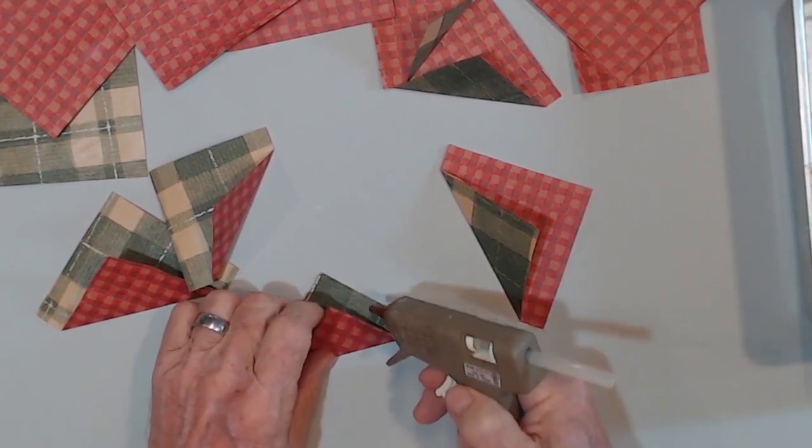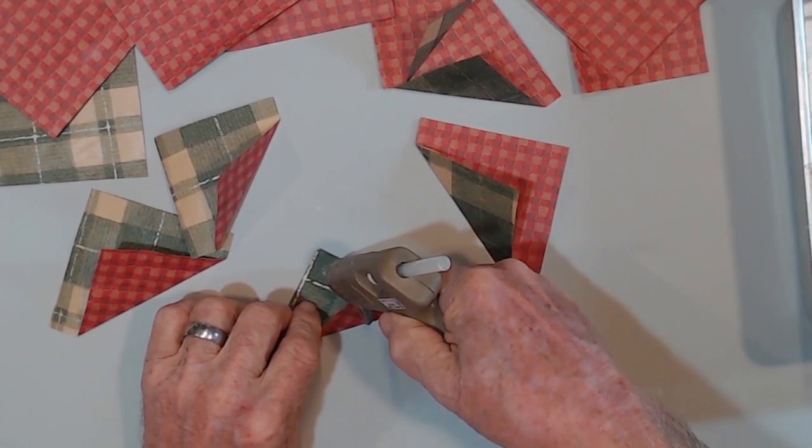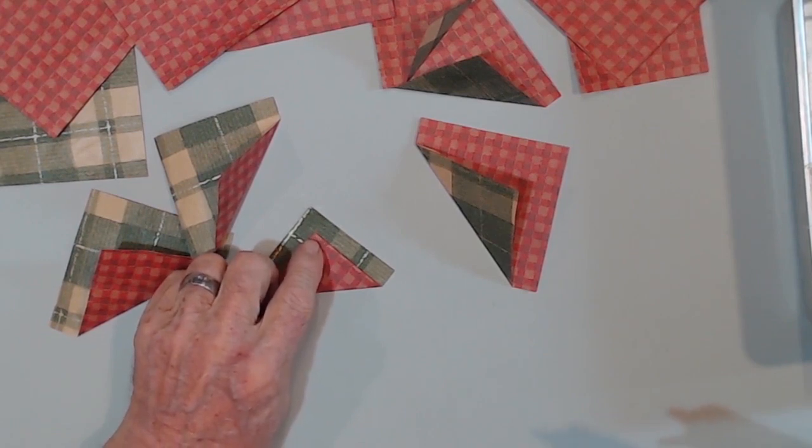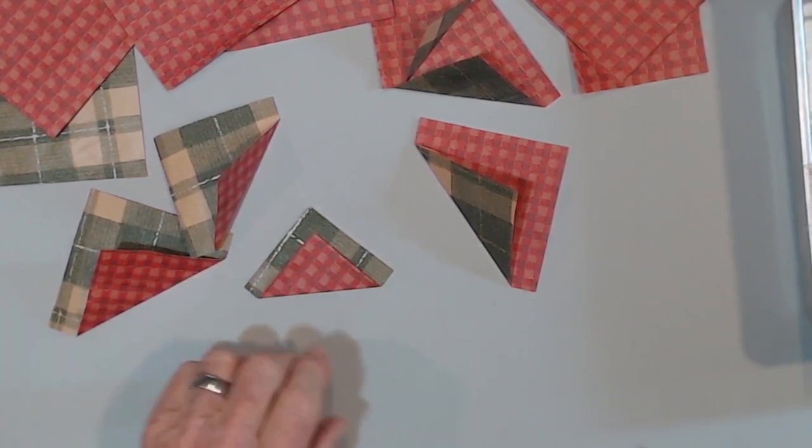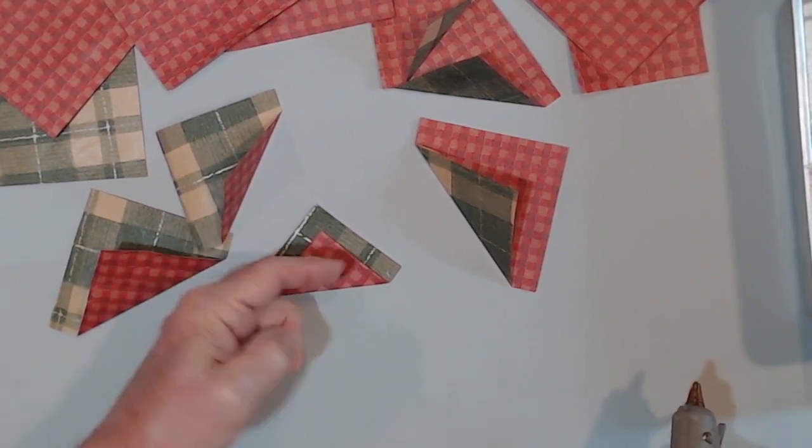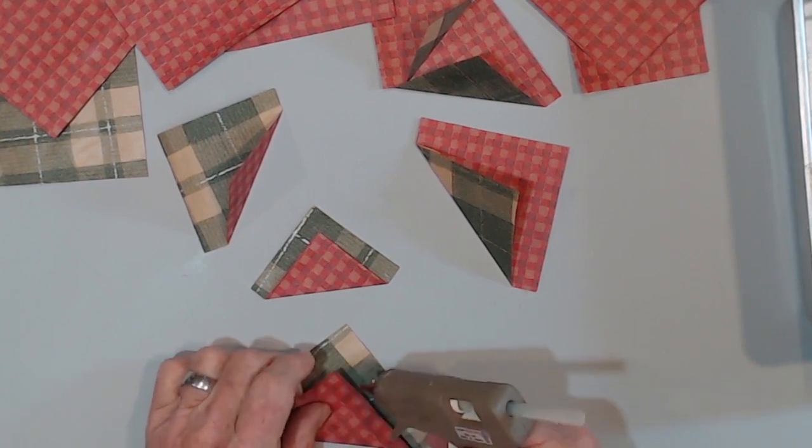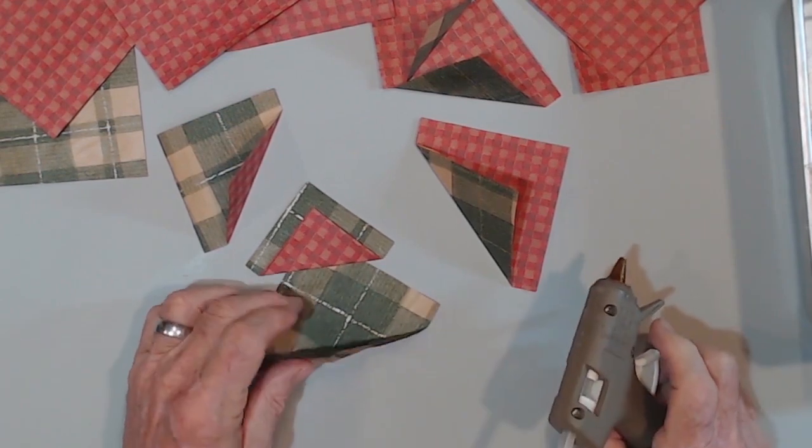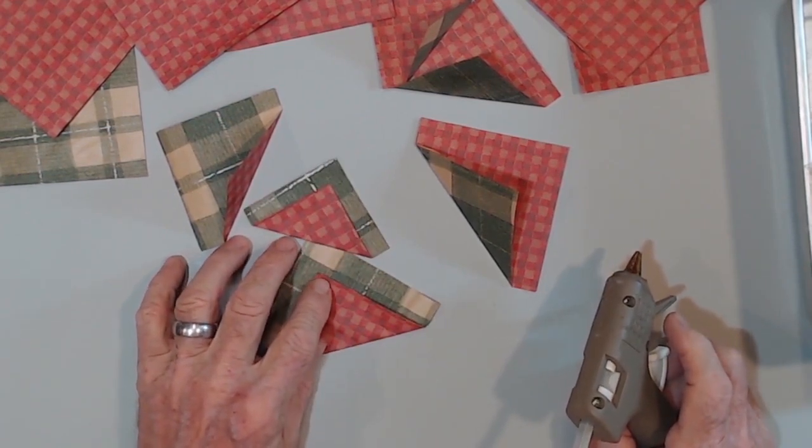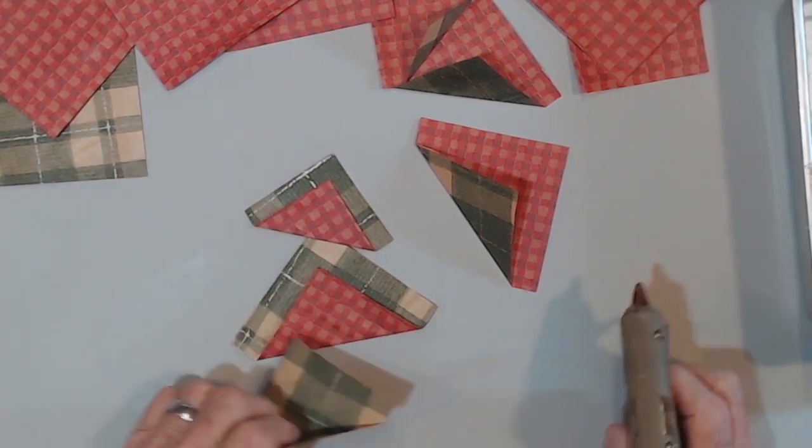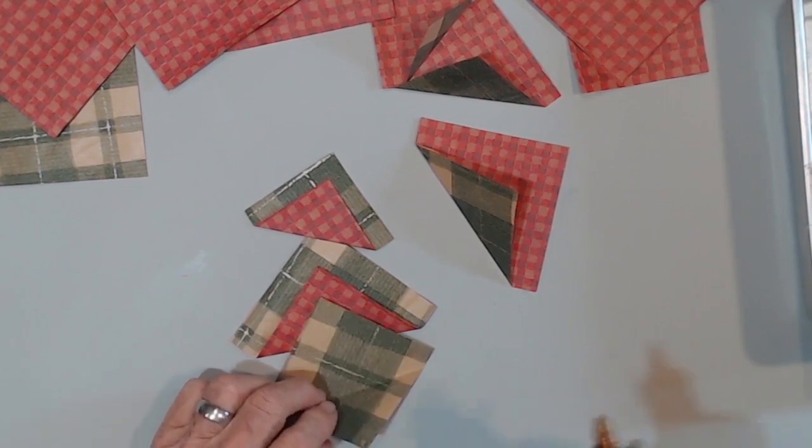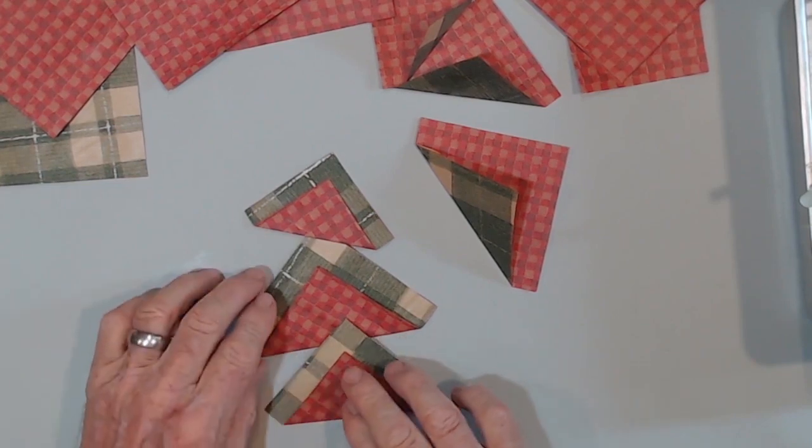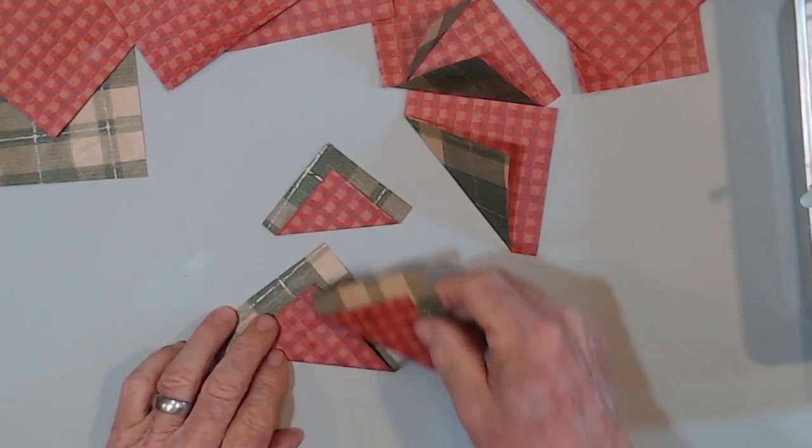I'm going to glue down just the tip of this triangle. See right there? So this part here is open. I'm going to glue this part down. It's easier to do it this way, I think. A little tiny dab of glue. There. Now it's, I think, getting easier to imagine.